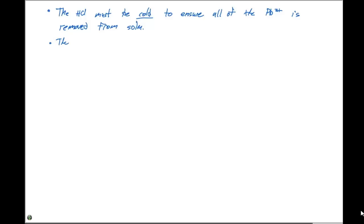The HCl must be dilute to prevent complex ion formation. The complex ions that could potentially form are AgCl2 minus, PbCl3 minus, and PbCl4 2 minus.